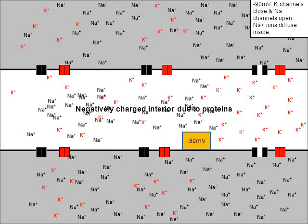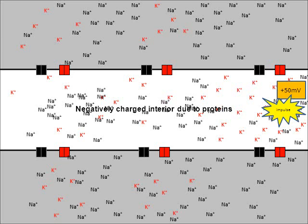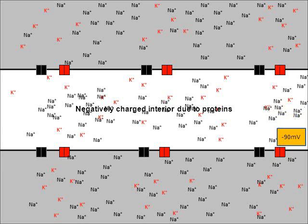The charge continues to drop because the potassium is exiting so rapidly. When the charge reaches negative 90, the red potassium channels close. Now let's focus on the last set of doors on the right — with the black sodium channels open, we simply repeat. Positively charged sodium ions diffuse in, bringing the charge up to positive 50 millivolts. Around positive 50, the sodium channels close and the potassium channels open; the potassium exits, dropping the charge to negative 90. Around negative 90 the potassium channels close, and the next set of sodium channels would open — the process keeps repeating.